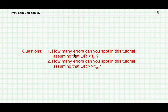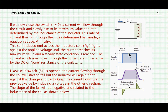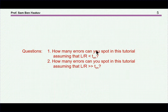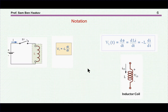So the riddle went as follows: how many errors can one find in this tutorial, assuming that the time constant L over R is much smaller than T-on? And how many errors can one spot assuming that the time constant is much larger than T-on? This depends upon the ratio of the inductance to the resistance.